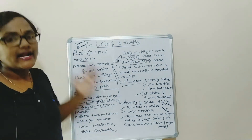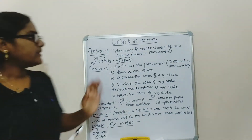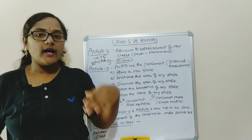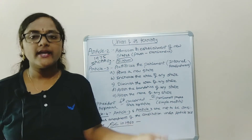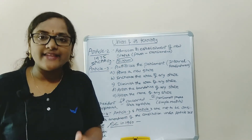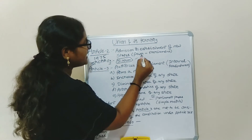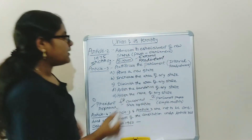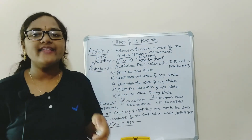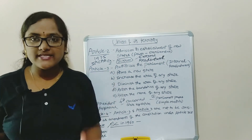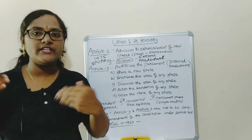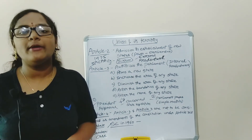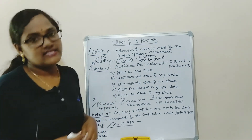Now, Article 2 is about the admission or establishment of new states. Article 2 says that if we are acquiring a territory from a foreign country, we are admitting it and establishing it as a new state — this is external readjustment. The power for this has been given to Parliament. For example, Sikkim: in 1975, through the 35th Constitutional Amendment Act, Sikkim was admitted as an associate state.